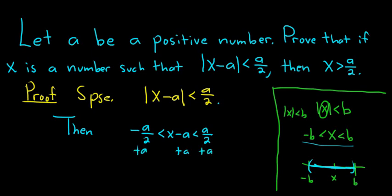When we're adding a, we can think of a as 2a over 2, so that when you add it here, you just get a over 2. Because it's 2a over 2 minus a over 2 gives you a positive a over 2, less than x. And this is 2a over 2 plus a over 2, which is 3a over 2.